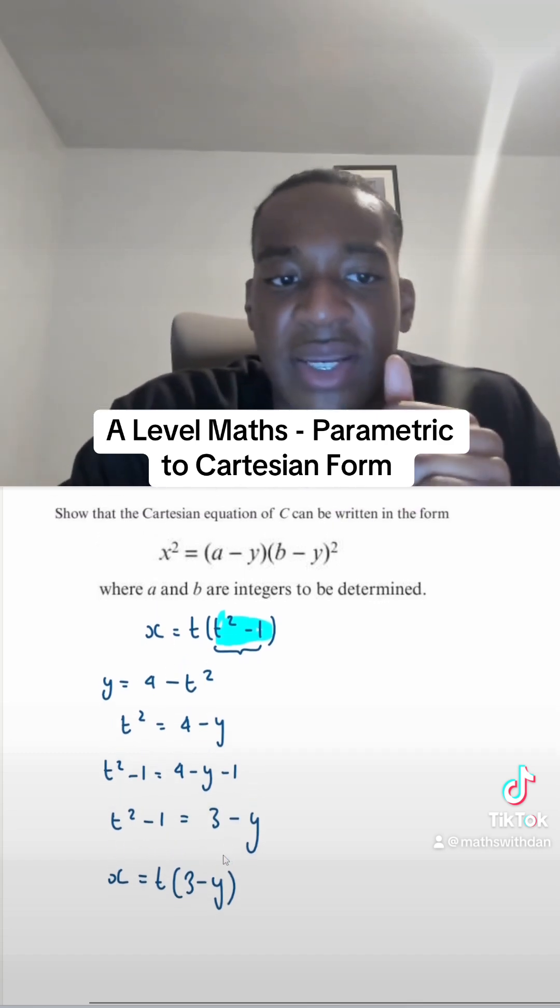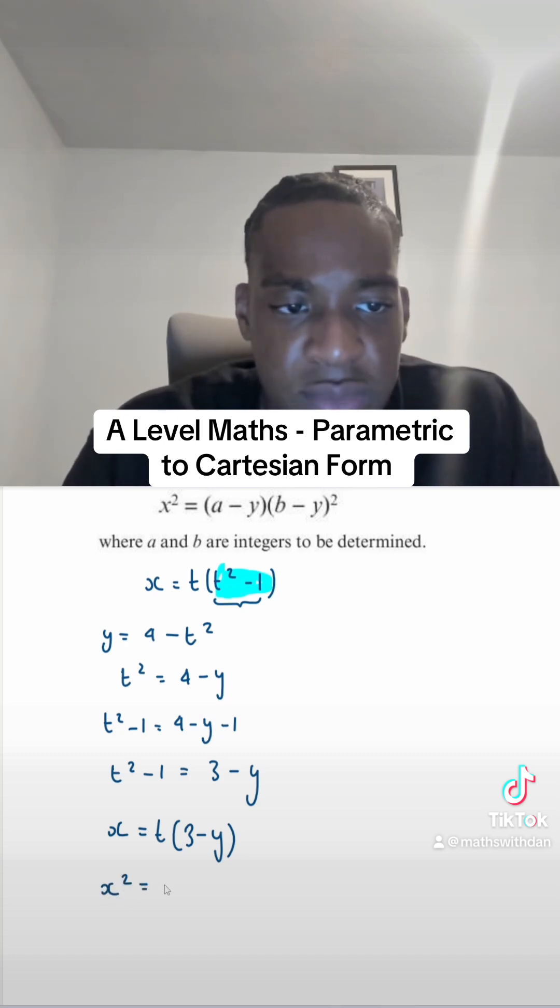Remember, we want x squared. So what I'm going to do is square it. If I square both sides, I'm going to have x squared equals t squared times (3 minus y) squared.